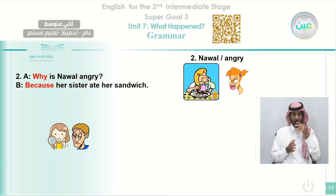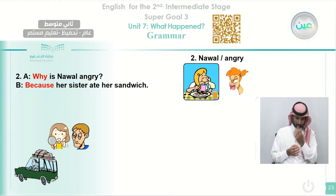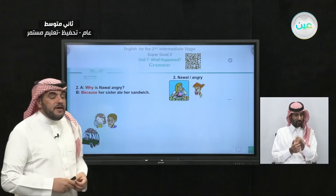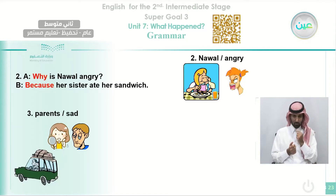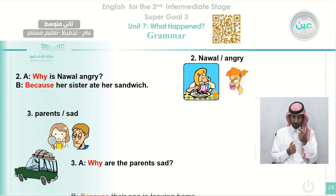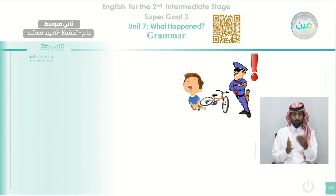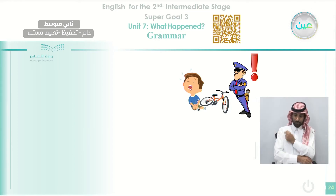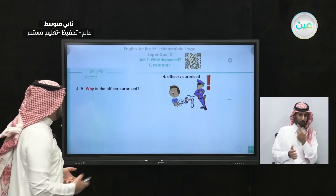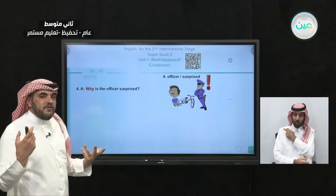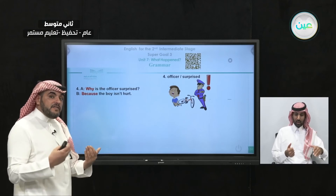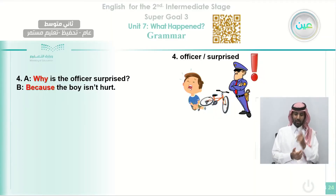These are parents and they look sad. Try to guess why — look at the car and imagine why these two parents are sad. Why are the parents sad? Because their son is leaving home. You can see their son is going away from home — that is the reason why they are sad. The last one: the boy had an accident using his bicycle and the police officer is surprised. Why is the officer surprised? Because the boy had a very bad accident and the boy isn't hurt.